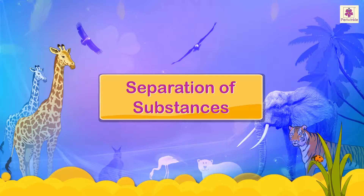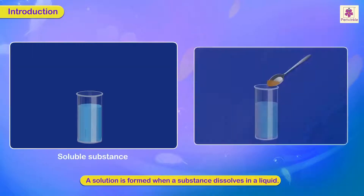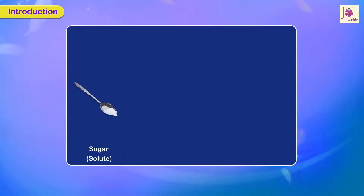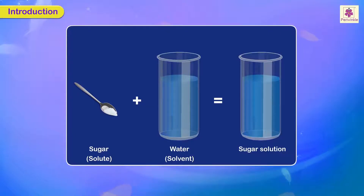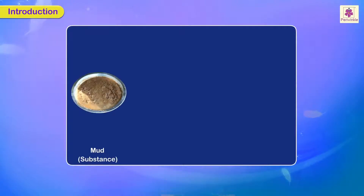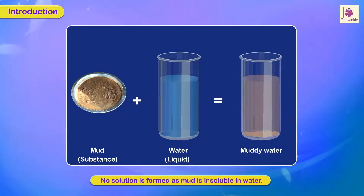Separation of substances: a solution is formed when a substance dissolves in a given liquid. If it is unable to do so, we say the substance is insoluble in that liquid. Sugar (solute) plus water (solvent) equals sugar solution, as sugar is soluble in water. Mud plus water equals muddy water — no solution is formed, as mud is insoluble in water.